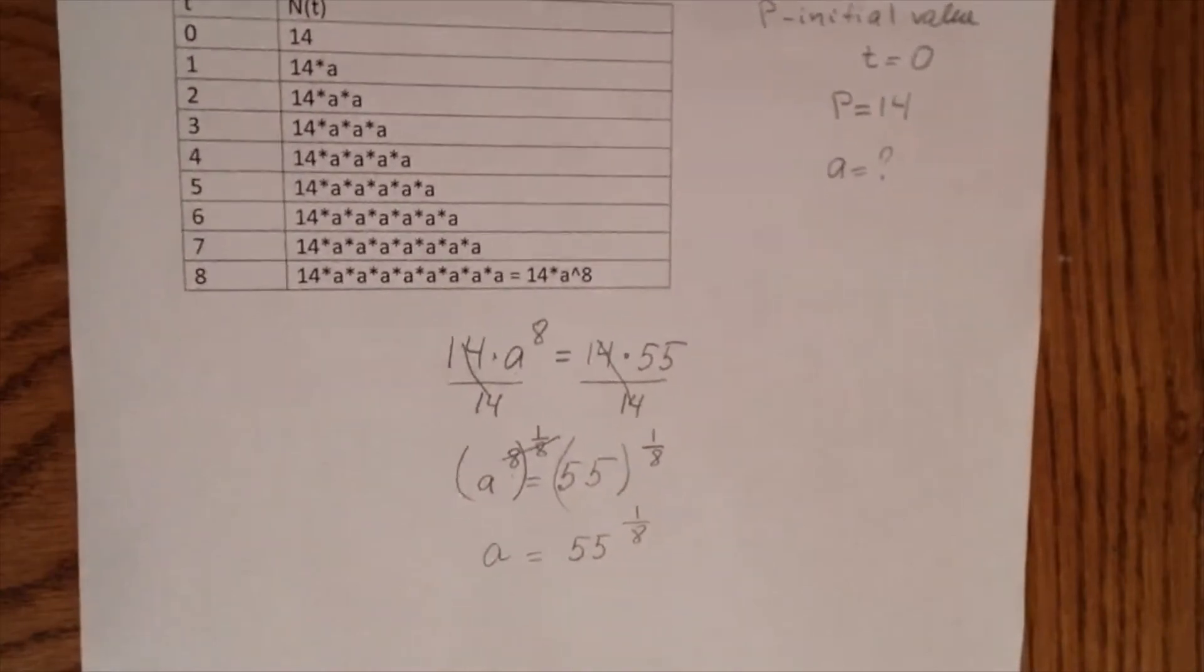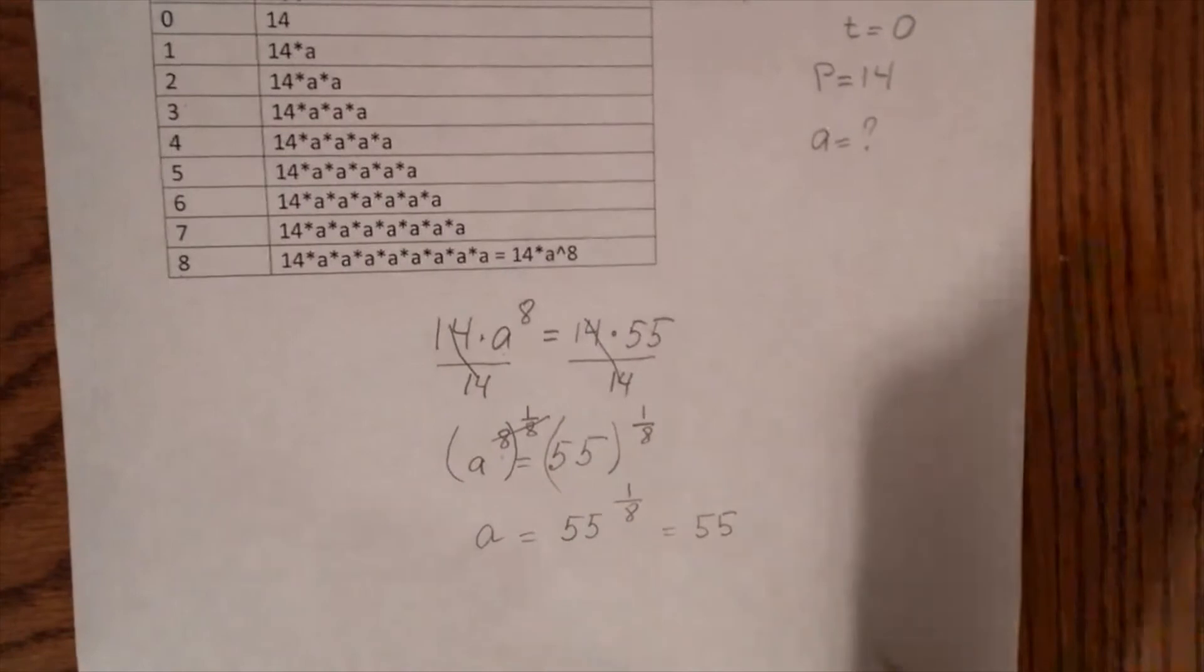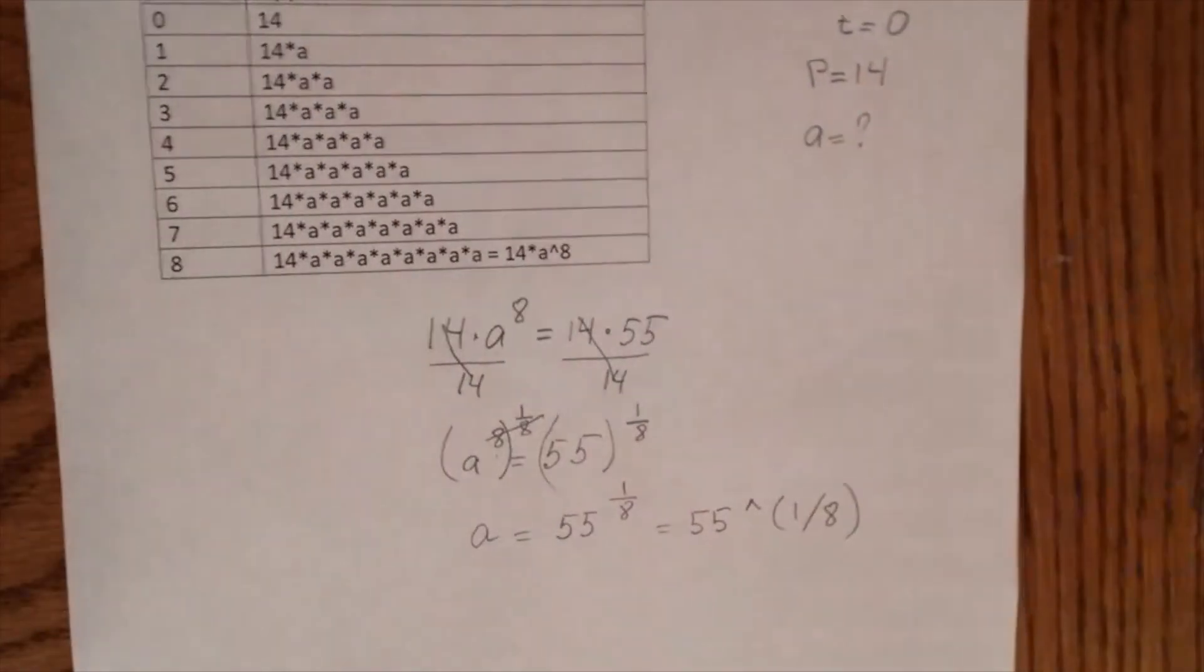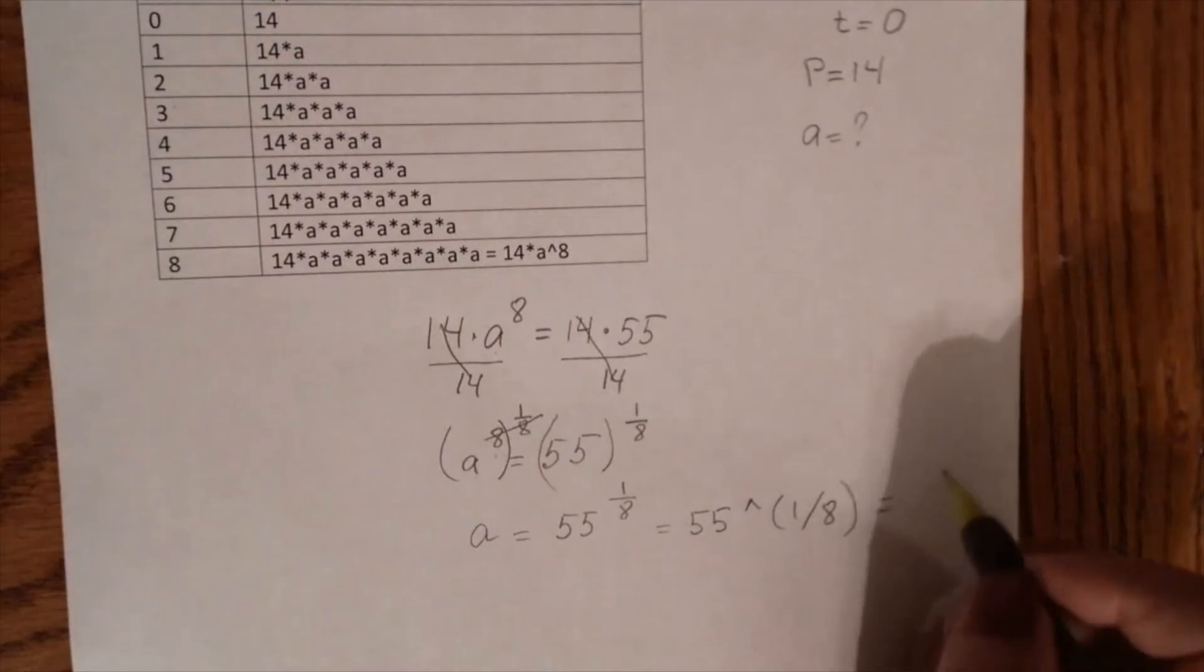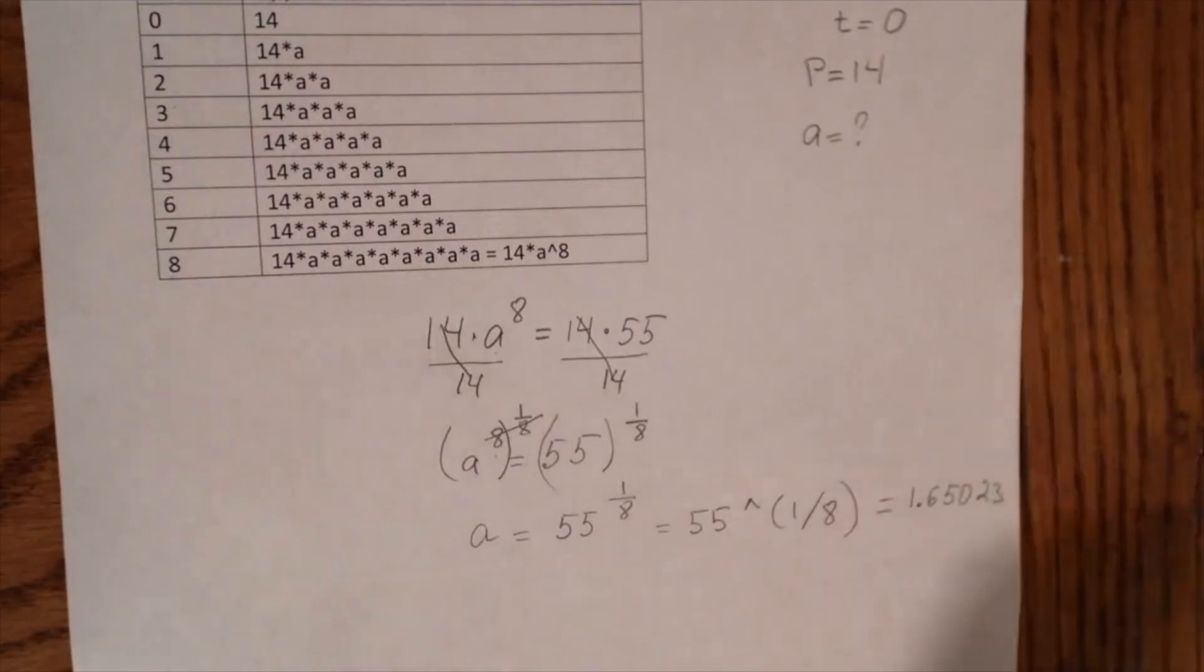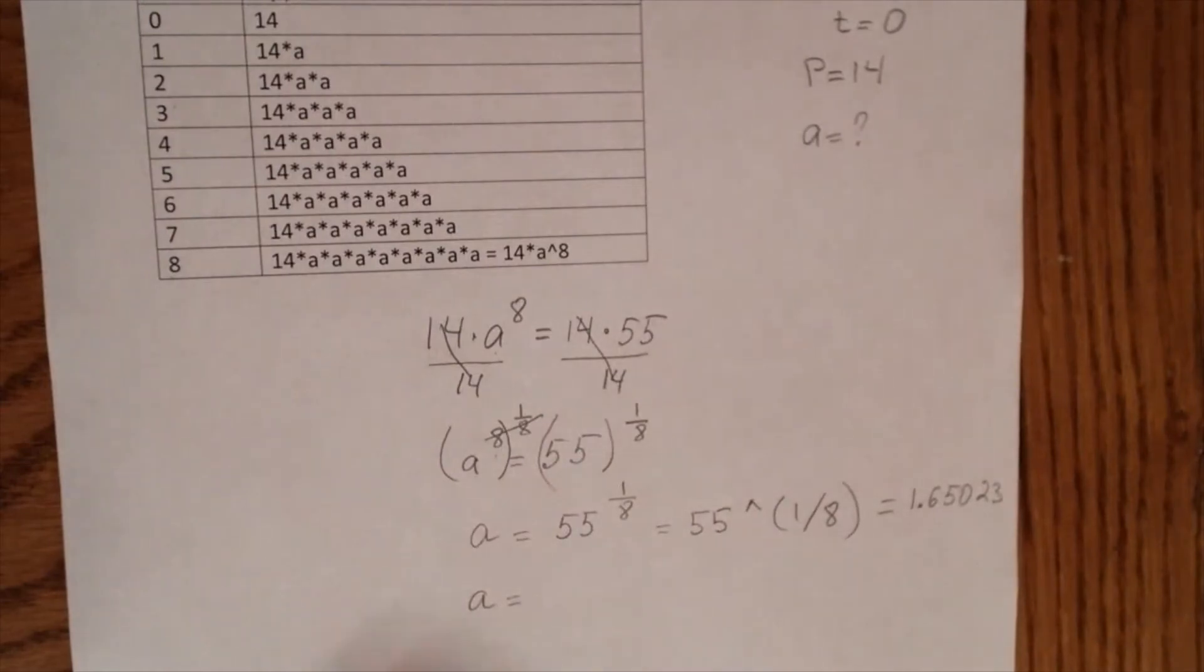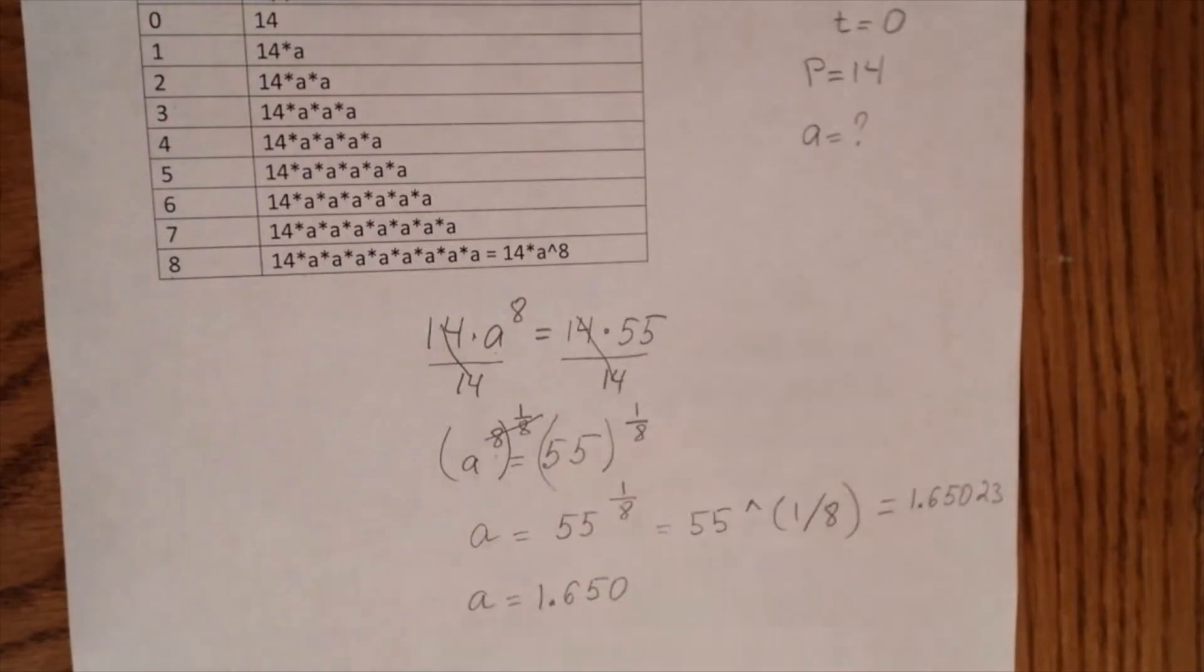Now we can use our calculator and calculate. When you type on your calculator, especially if you have a TI-83 calculator, be careful with typing. It should be 55 to the power 1 over 8. And the answer will be 1.65023. We need to round a to three decimal places, so it will be 1.650.